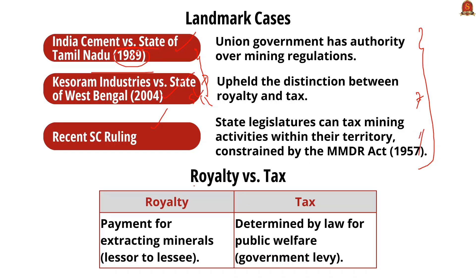The distinction between tax and royalty: royalty is a payment made by a mining lessee to the lessor for the right to extract minerals. Tax, on the other hand, is determined by law and can only be levied by public authorities to fund welfare schemes and public services. This is the major difference between royalty and taxation.